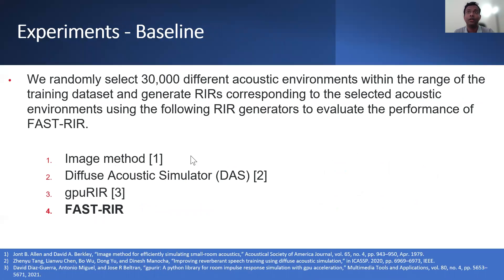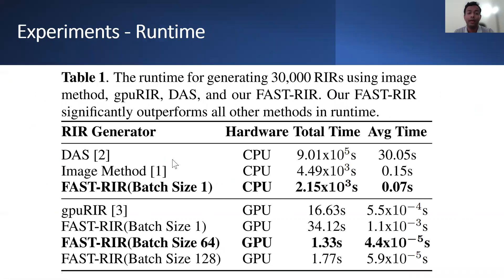We randomly select 30,000 different acoustic environments within the range of the training dataset and generate room impulse responses for each using the following room impulse response generators to evaluate the performance of our fast RIR. We compare the performance of fast RIR with room impulse responses generated using the image method, diffuse acoustic simulator, and GPU RIR. We evaluate the runtime of generating 30,000 room impulse responses using each of these methods.